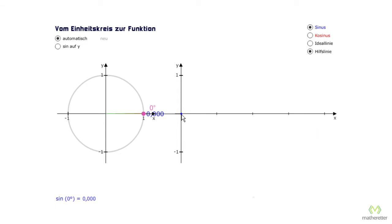And here is our second coordinate system whose x-axis is our angle. Here we have 0 degrees, here 90 degrees, here 180 degrees, here 270 degrees, and 360 degrees. So you can imagine that we cut this circle and then rolled it out here.